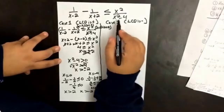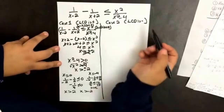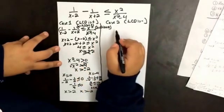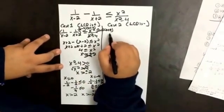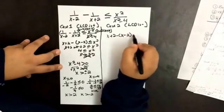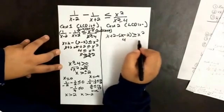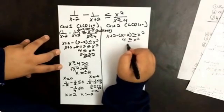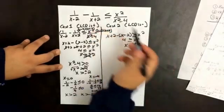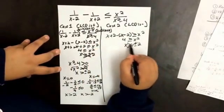If we multiply by a negative expression, remember the inequality sign changes. So then we're going to end up with x plus 2 minus x minus 2 is greater than or equal to x squared. Our x's cancel and we end up with 4 is greater than or equal to x squared. So then x is less than or equal to plus or minus 2. If we plug those in, the same thing happens — they're undefined, so we will not be using those values.